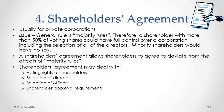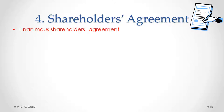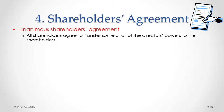The shareholders' agreement would also include various requirements for shareholder approval — what types of decisions need to be approved by shareholders and by what percentage. It could also include restrictions on the transfer of ownership of shares of the corporation. With a unanimous shareholders' agreement, all of the shareholders could agree to transfer some or all of the directors' powers over to the shareholders, covering the high-level supervision and management of the corporation.